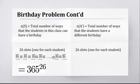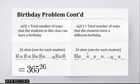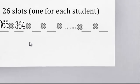26 slots. If we want to find out how many ways we have a different birthday, we've got 26 slots, one for each student. And so we draw the slots, but we don't want to write all 26. So we do a little dot, dot, dot in the middle just to give us the idea. How many ways can the first student have a birthday? We've got 365. How many ways can the second student have a birthday? Well, they have to have a different birthday, so you've got 364.